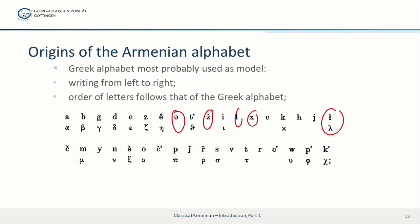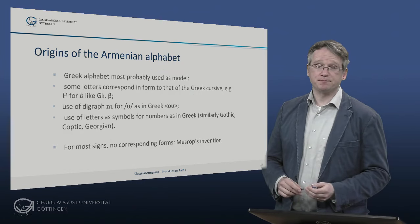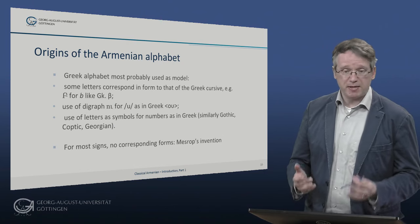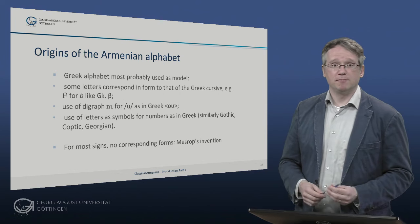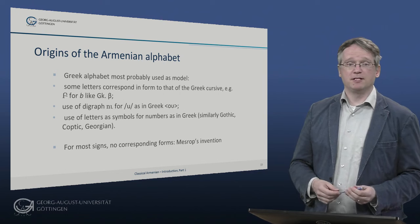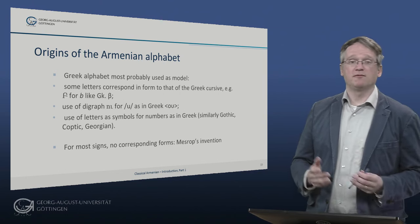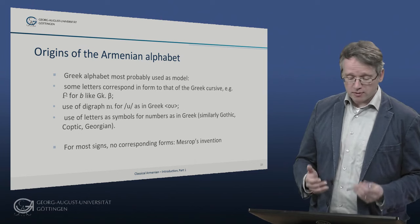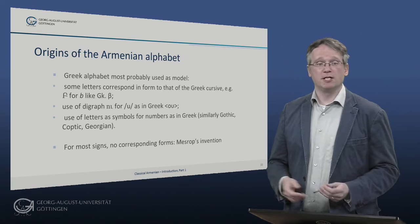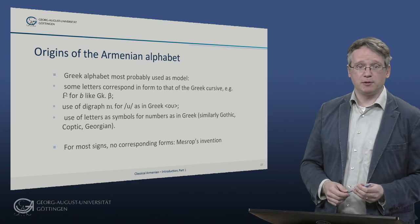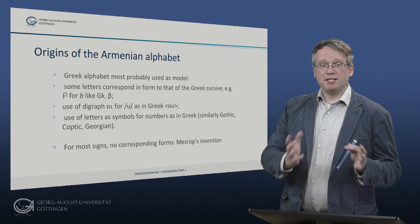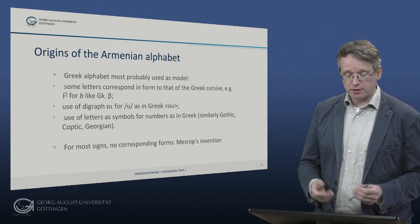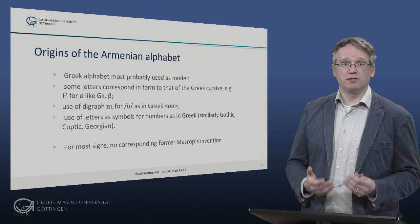Letters are also used as symbols for numbers, as in Greek and other writing systems that took Greek as their example. However, while the basic structure seems to be modeled on Greek, for most signs there are no hard and fast correspondences elsewhere. So one gets the impression that overall the script is a new invention of Mesrop Mashtots.